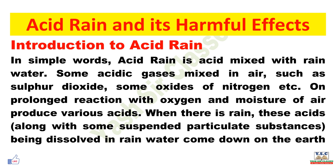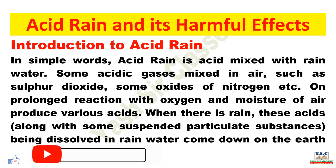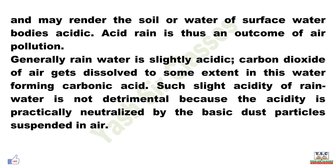Introduction to Acid Rain: In simple words, acid rain is mixed with rain water. Some acidic gases mixed in air, such as sulfur dioxide and some oxides of nitrogen, on prolonged reaction with oxygen and moisture of air produce various acids. When there is rain, these acids along with some suspended particulate substances being dissolved in rain water come down on the earth.